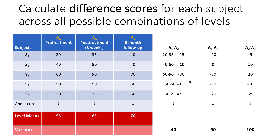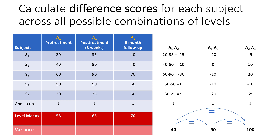Without walking through all of the math, we take these deviation scores and compute the overall variation using sum of squares. Let's say we end up with a variance of 40 for A1-A2, 90 for A1-A3, and 100 for A2-A3. The sphericity assumption basically assumes that these variances in the contrasts are equal to one another. The null hypothesis for Mauchly's test is that all three of these variances are equal. The alternative hypothesis — when you get a statistically significant Mauchly's result — is that at least one of the variances is significantly different from one of the others.